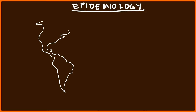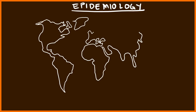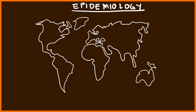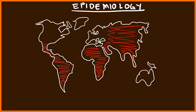Now let's look at the epidemiology of Hepatitis A virus on a worldwide scale. The prevalence is much greater in third world countries, including South America, Africa, and all of Asia. In first world countries such as the United States, Europe, and Australia, the prevalence is much lower. Hepatitis A virus is clearly differentiated based on whether it's a first world or third world country.